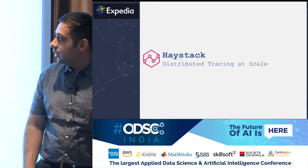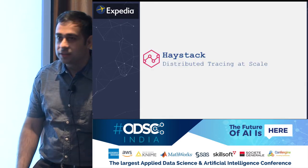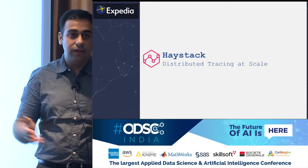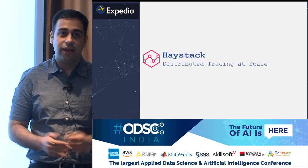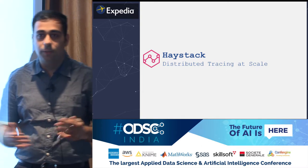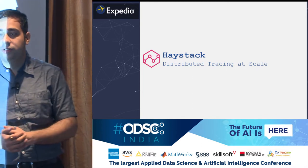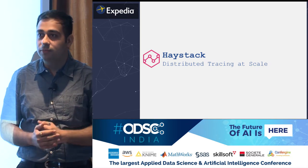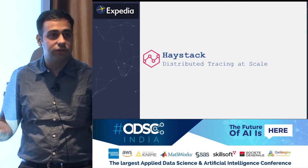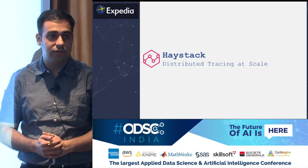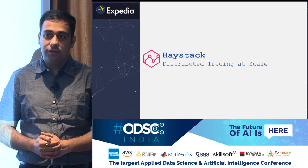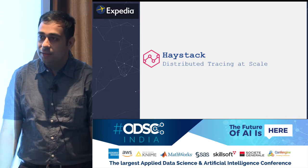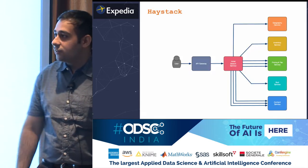Let's start with Haystack. What is Haystack? In a single line, Haystack is Expedia's open-source distributed tracing solution that helps in detection of problems in a microservice architecture. Sounds complex? Well, it isn't. Let's take an example.